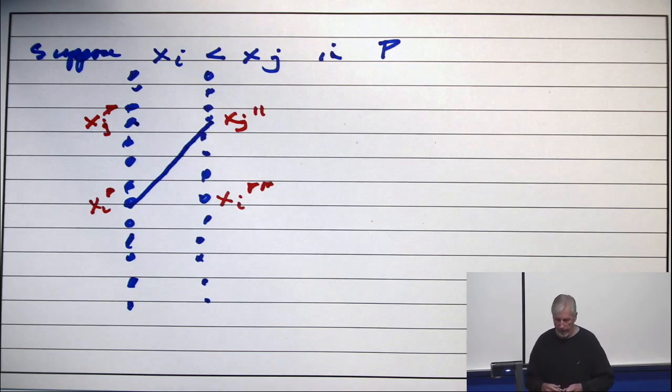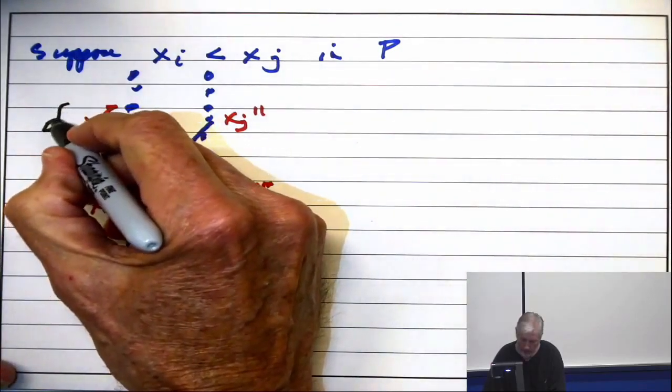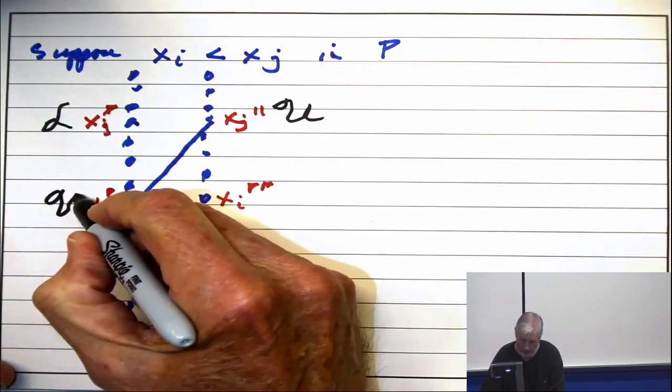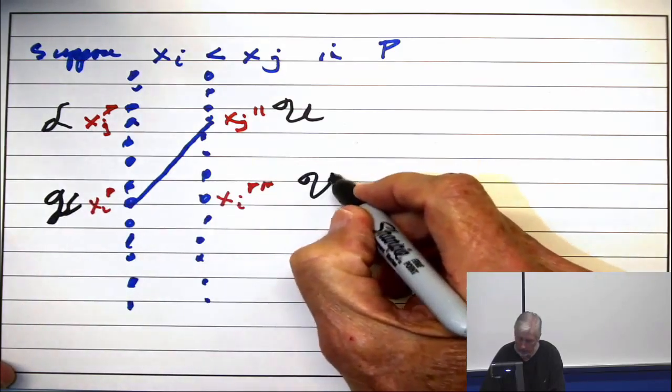Now, let's indicate whether it's labeled or unlabeled. This guy is supposed to be labeled. This guy is supposed to be unlabeled. This guy is supposed to be labeled. This guy is supposed to be unlabeled.